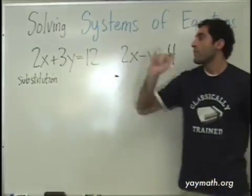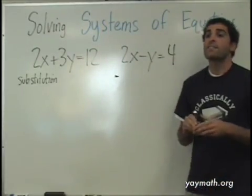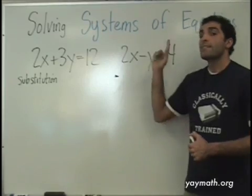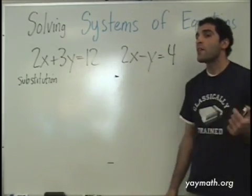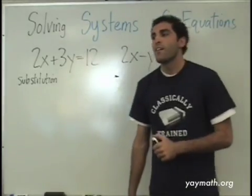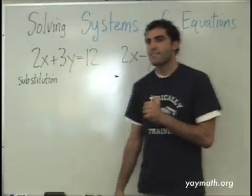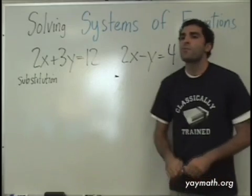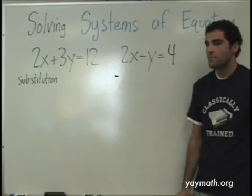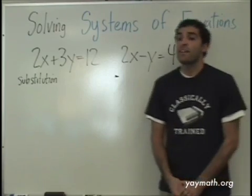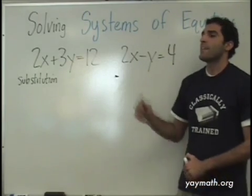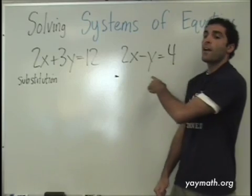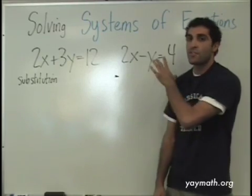Substitution method. First step: write the equations side by side — hopefully you did that. Next step is to isolate the variable. We have four choices. Which one would be the easiest to isolate? In the equation two x plus three y equals twelve — which are we going to isolate, x or y? The negative y, because it can be done without any division.